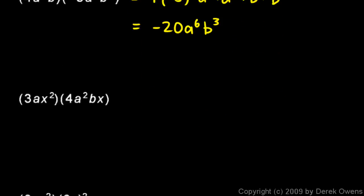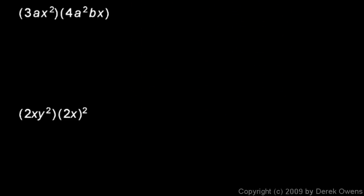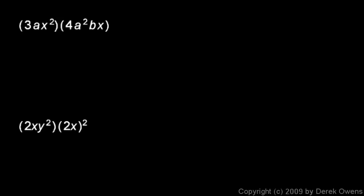Now let's get the next two examples. In this one we have 3ax squared times 4a squared bx. So this will be equivalent to 3 times 4 times a times a squared times x squared.